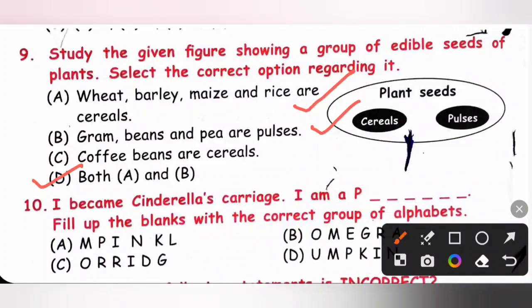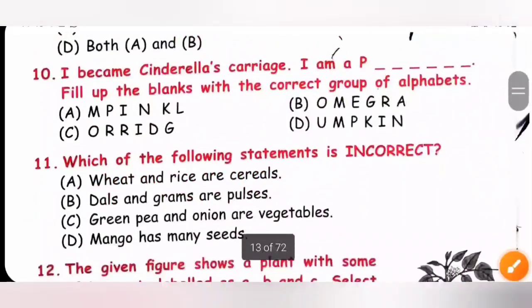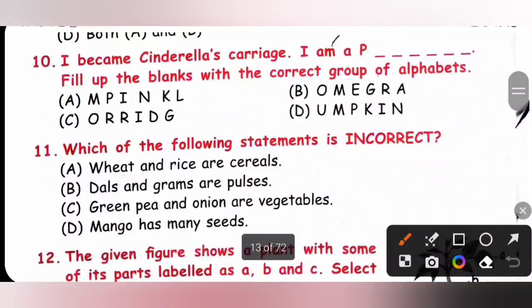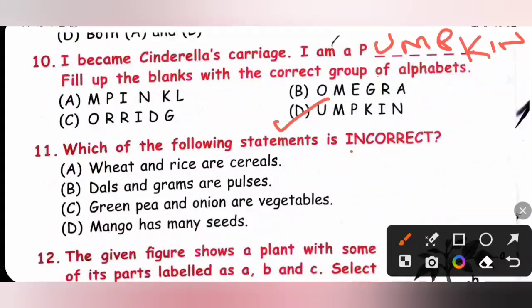Tenth one, I become Cinderella's carriage. I am a dash. Fill up the blanks with the correct group of alphabets. We know I am a pumpkin. P-U-M-P-K-I-N. So option D is the correct answer.